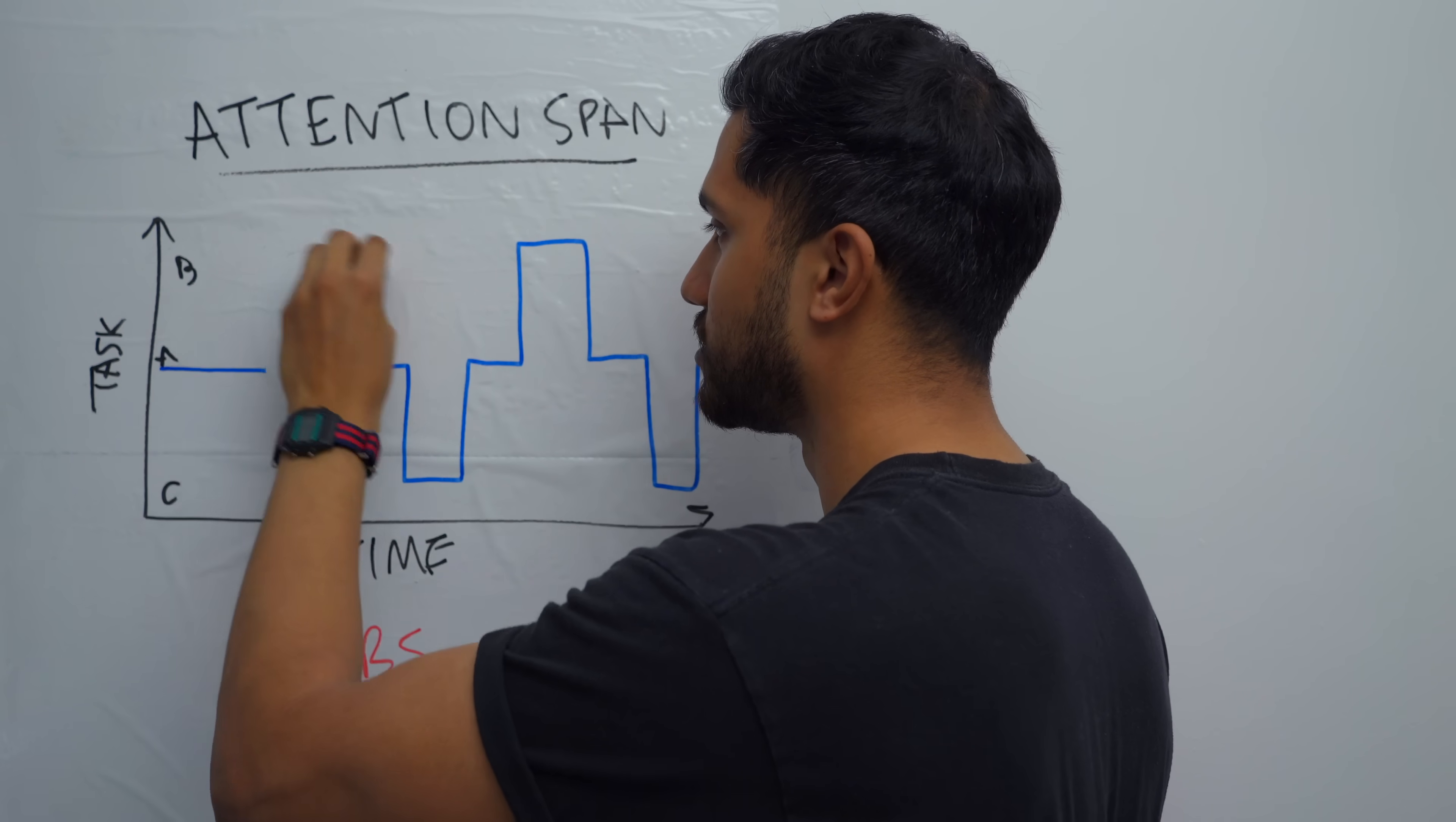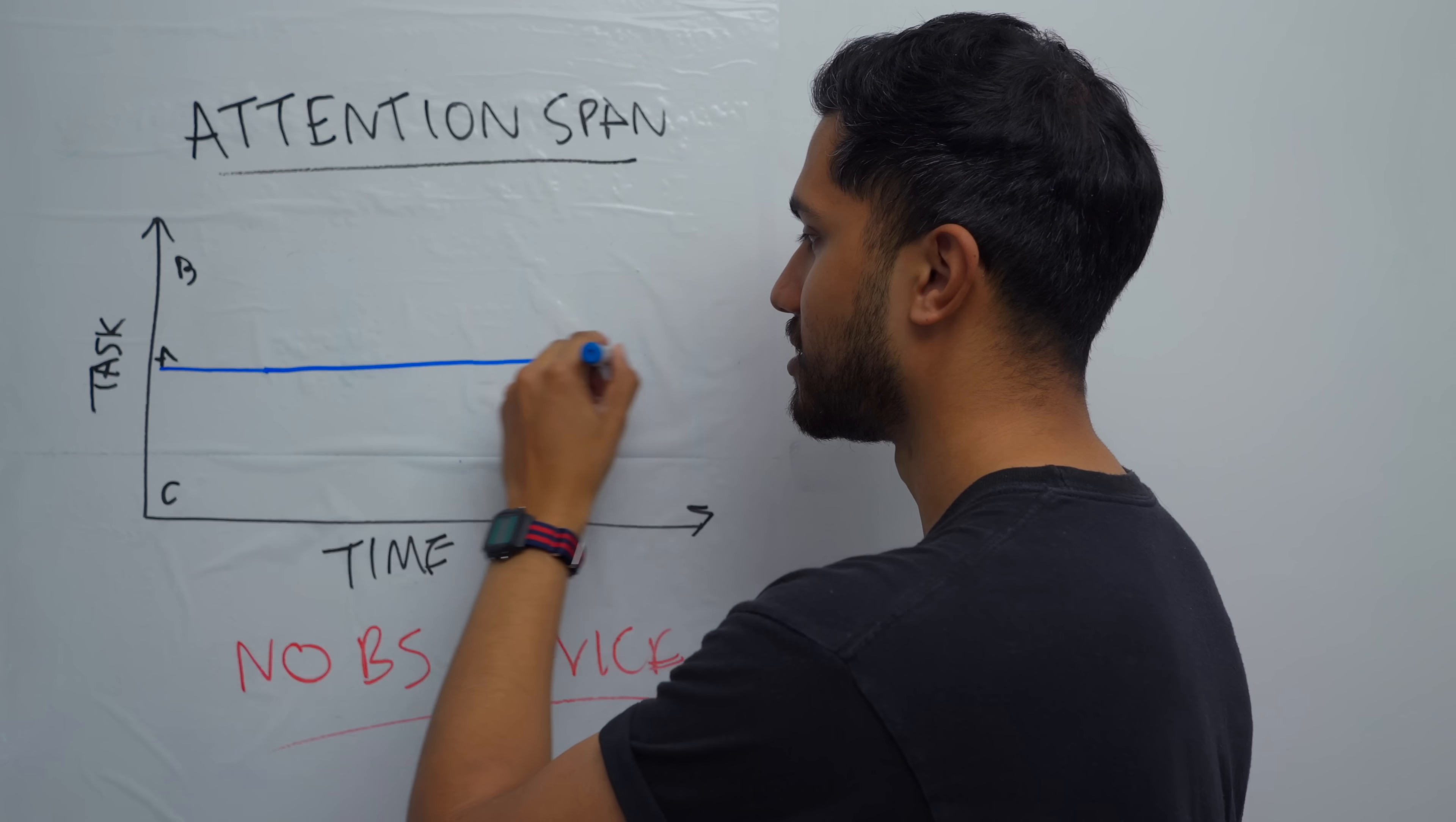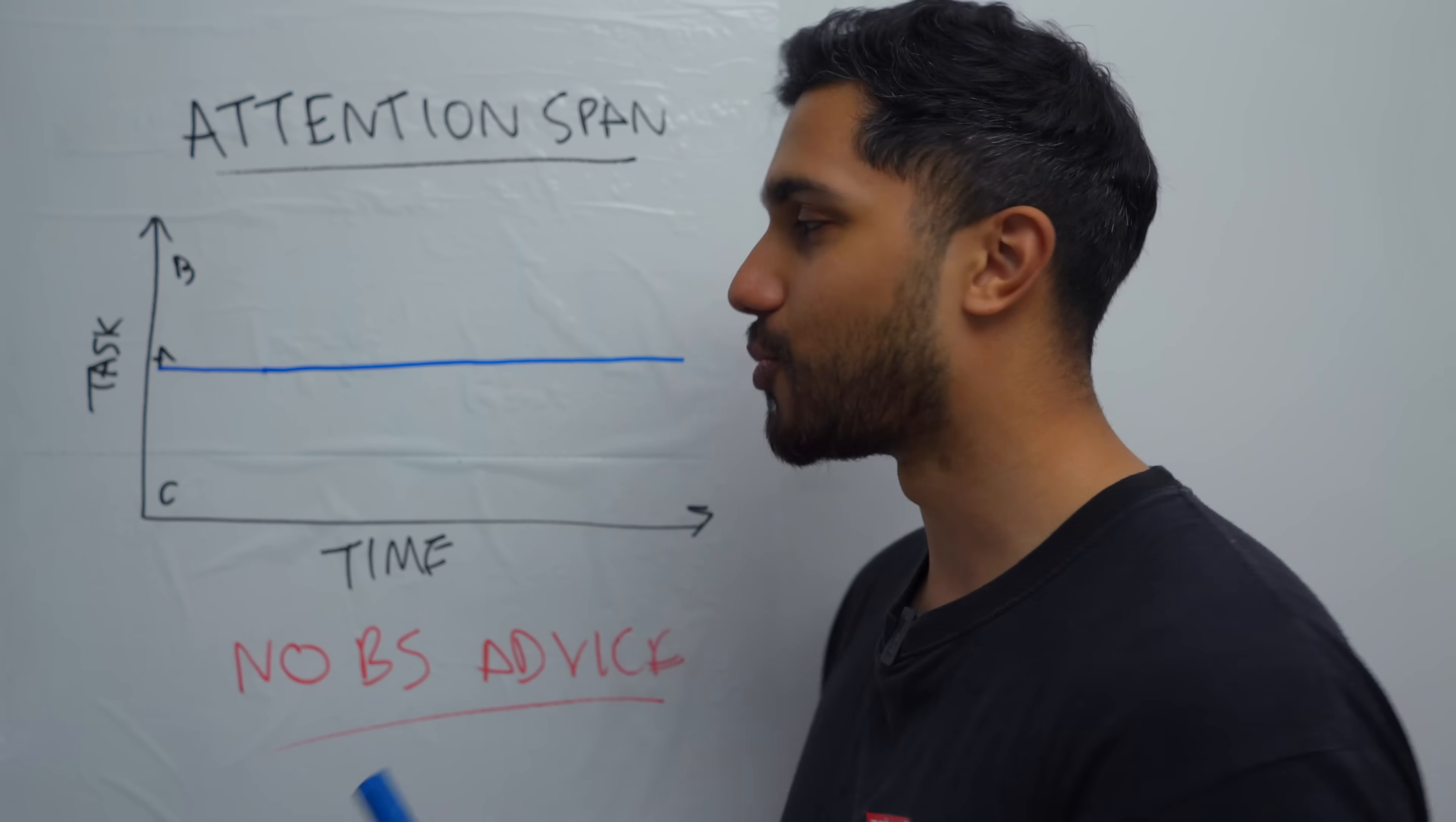So if you wanted to visualize what a good attention span looks like, a good attention span is that if you spend a lot of time and you intend to work on task A, you just work on task A for the whole time. That is what an ideal attention span would look like. But this is how it would work if you're a robot, but you're a human and our brains don't work like that.